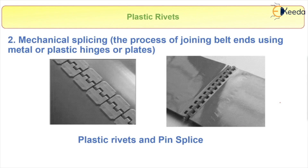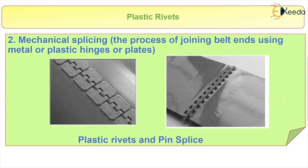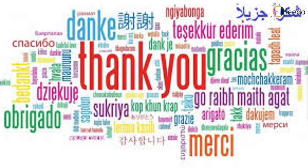Next in mechanical splicing we also have plastic rivets and pin splice. Here you can see it is simply a hinge-type structure with a simple pin. The pin is attached in this fashion, and here we have a plastic rivet.